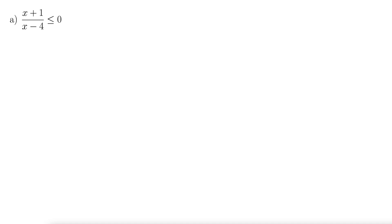In this example, we have a rational inequality, which is also a non-linear — it's a form of non-linear inequality. Here we have x plus 1 over x minus 4 less than or equal to 0. We have an x in the denominator along with an inequality. Those two things together signify quite a bit of work needs to be done to solve these problems.